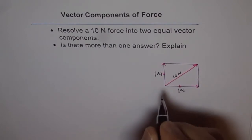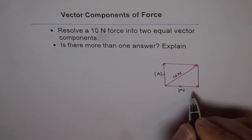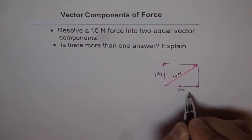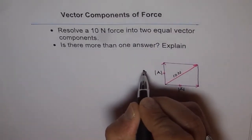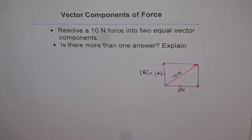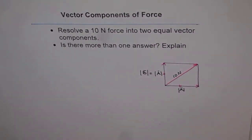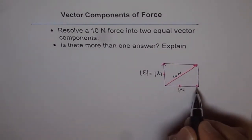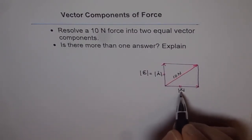I should clarify: this is vector A along the horizontal direction and this is vector B along the vertical direction. The magnitude of vector B equals the magnitude of vector A, since both are equal. The vectors themselves are different — one direction is horizontal and the other is vertical. Now let's try to solve for A.